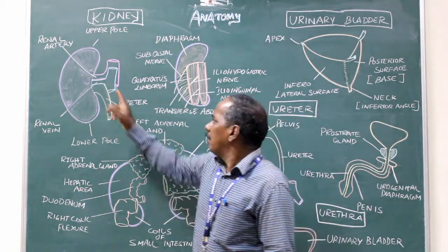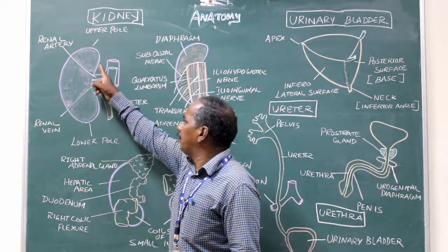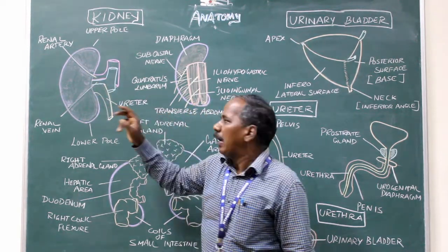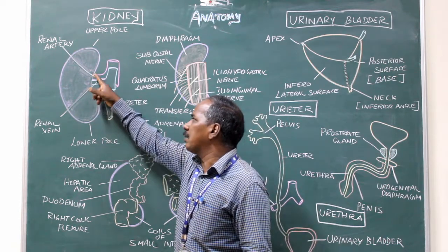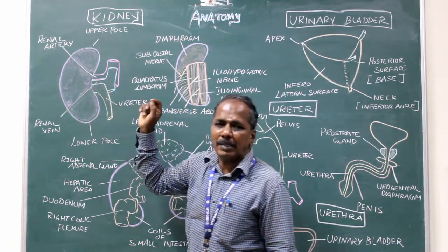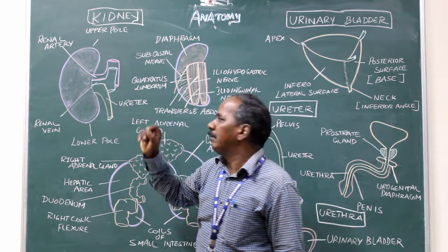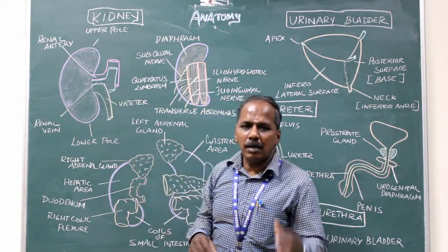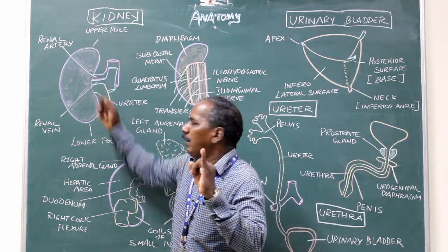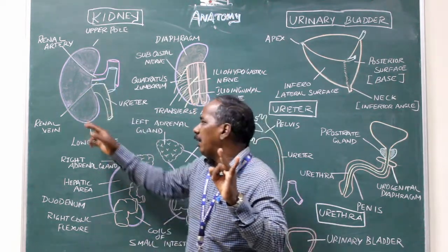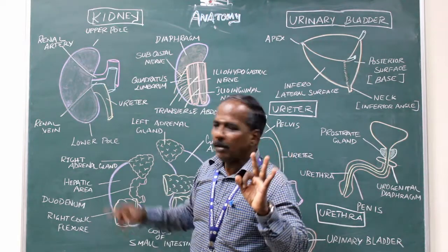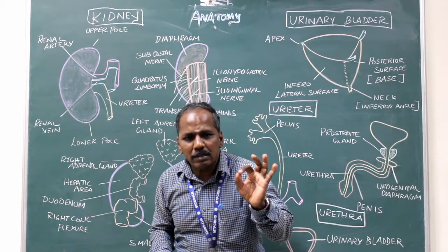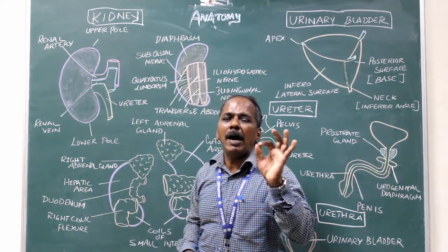On the middle of the medial border there is a slit or opening known as the renal hilum. The structures present at the renal hilum are: number one, renal artery; number two, renal vein; number three, ureter; number four, sympathetic plexus surrounding the renal artery.